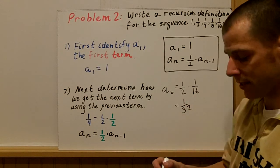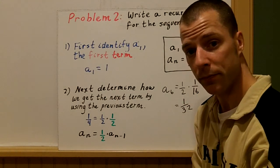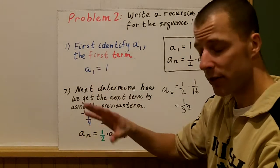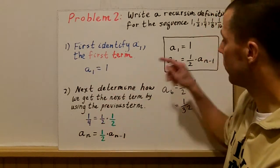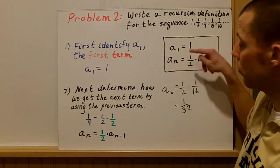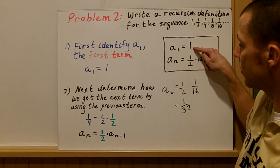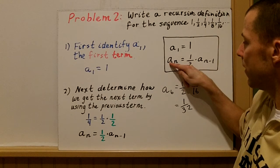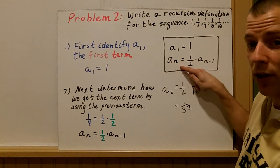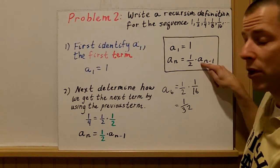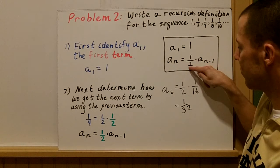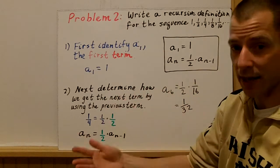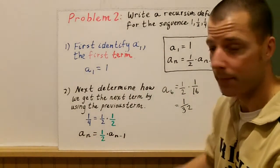To write the formal recursive definition, we include two things: the first term, a sub one equals one, and the formula. To find the next term, take the previous term and multiply it by one-half. That is our rule, our definition, our formula.